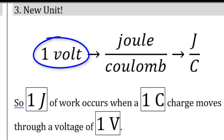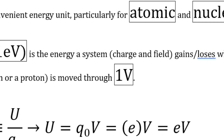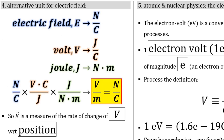We have a brand new unit to introduce. One volt, if we do the dimensional analysis, is a joule per coulomb. In box four, I'm taking the units for electric field strength, which is newtons per coulomb, and running it through a series of conversions to show how it's equivalent to a volt per meter.